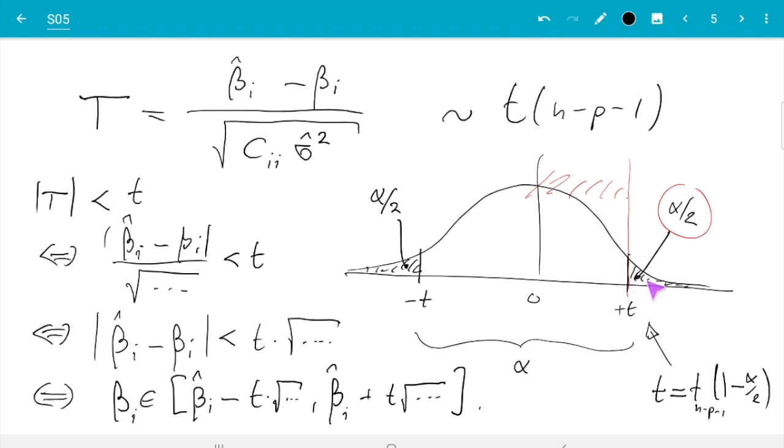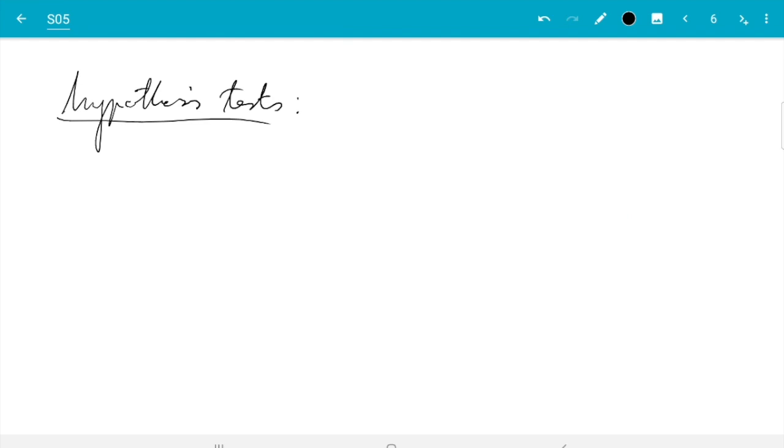So for hypothesis tests, we redefine t a bit and instead plug in here the value we are testing for. Let's say we test the hypothesis beta i equals some value b against the alternative, they are different.